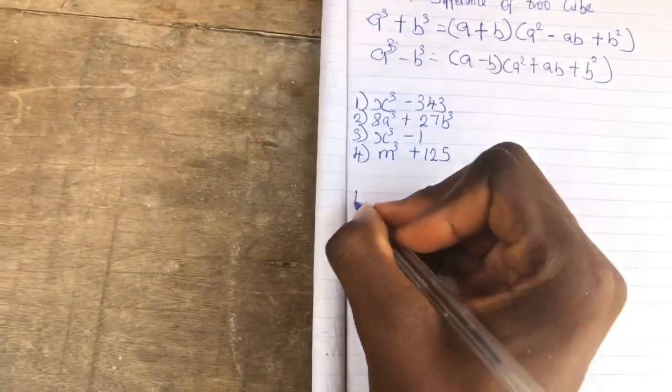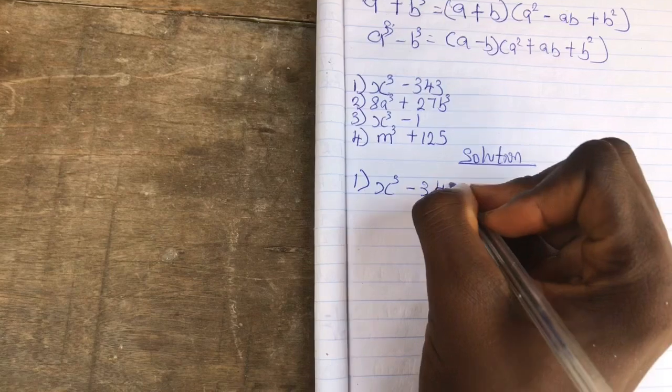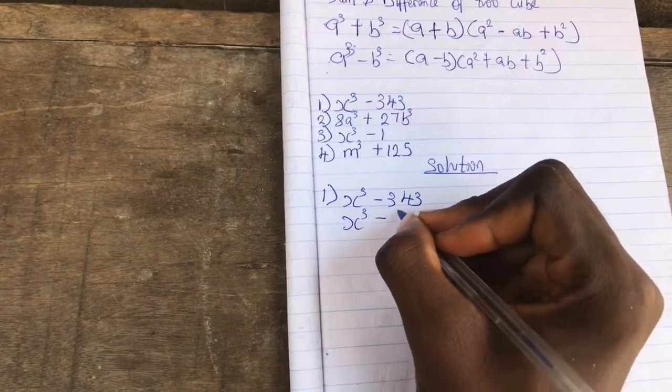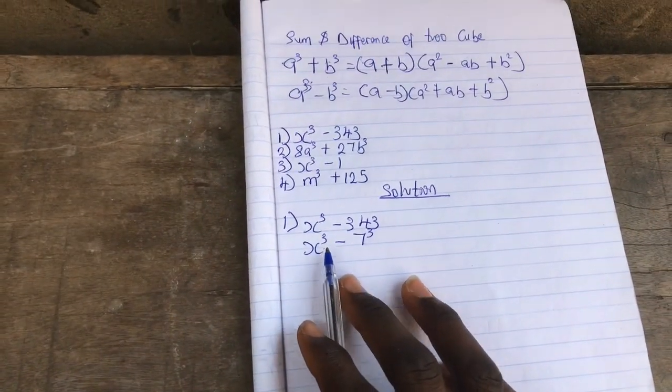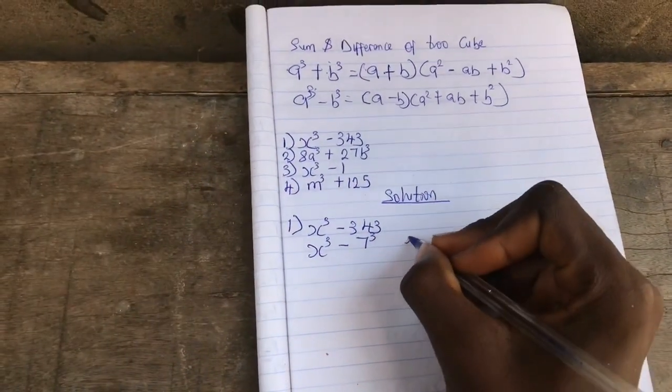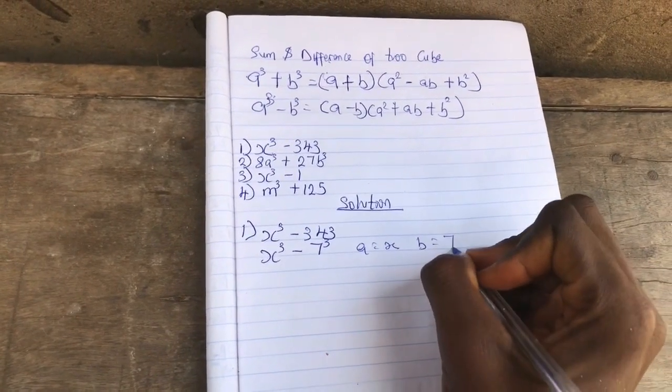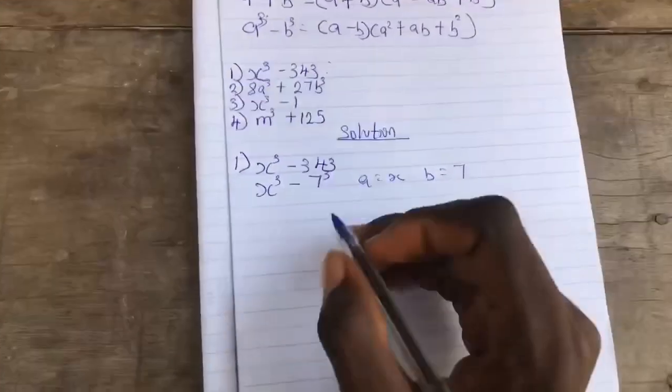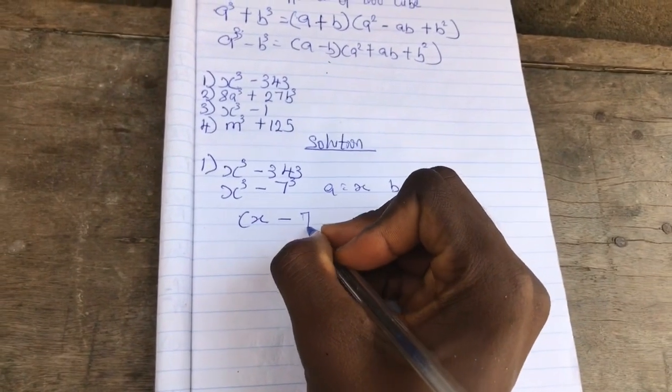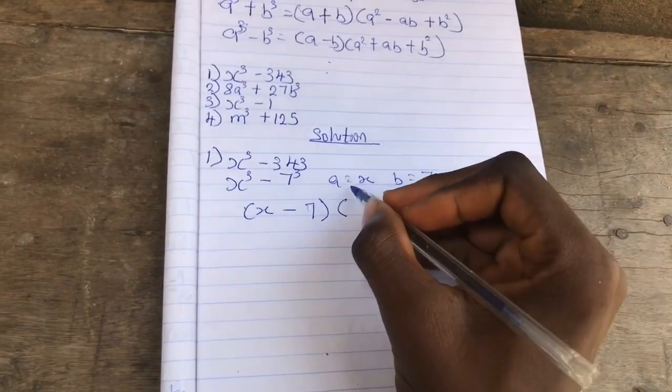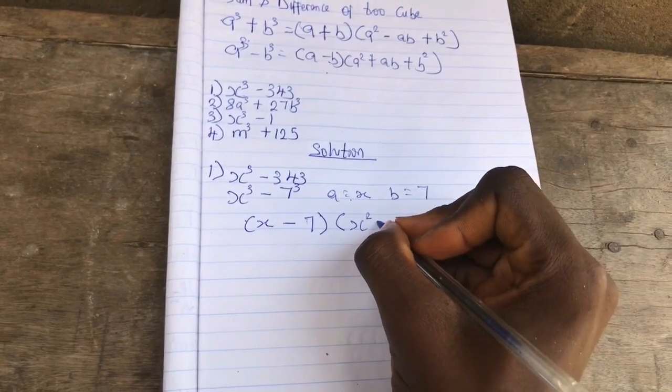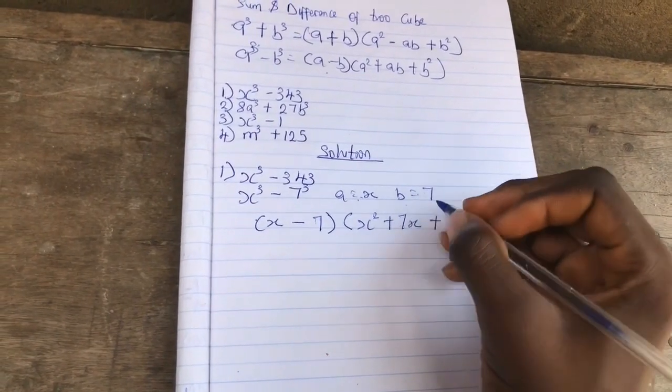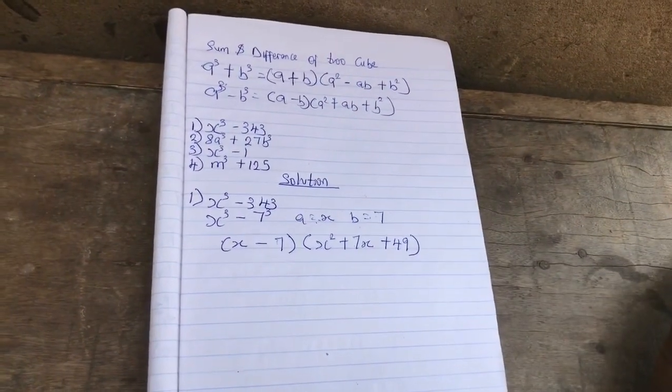The first question is x³ - 343. Remember from our previous class, you can break this down to x³ - 7³. This is the difference of two cubes, so our a is x and our b is 7. Using the formula, this is (x - 7)(x² + 7x + 49). That's all, we are done with number one.